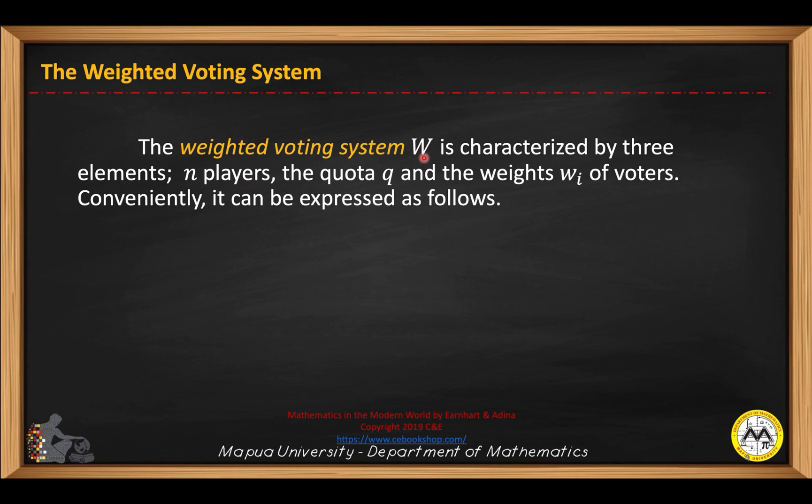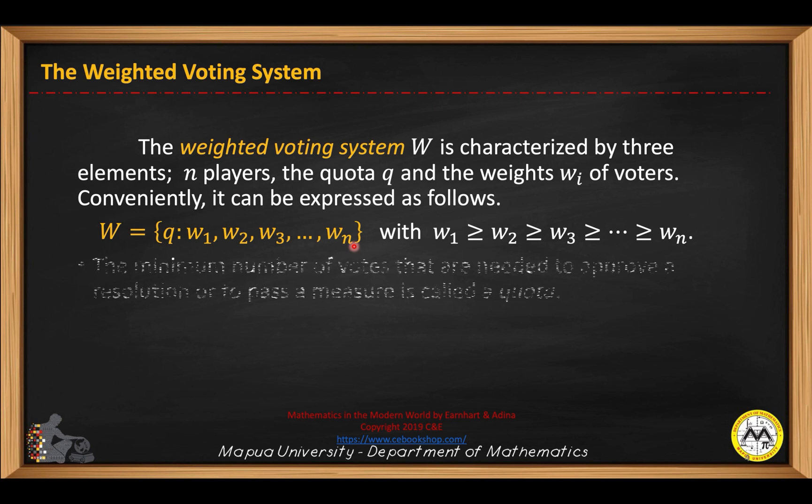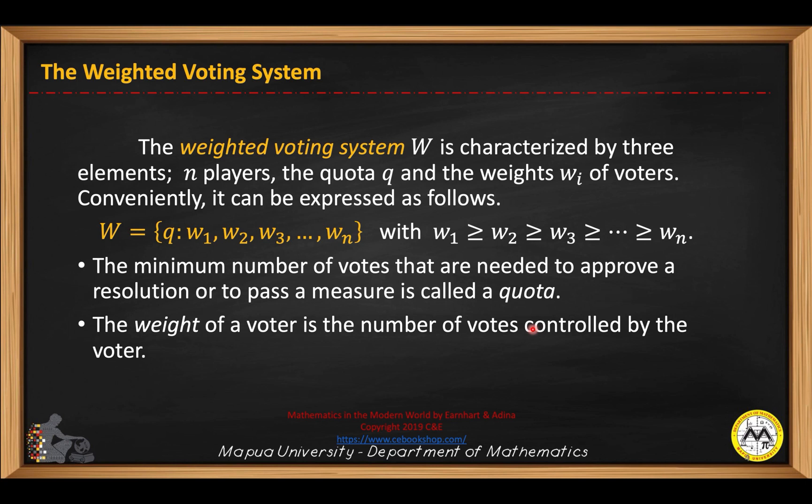The weighted voting system, denoted by W, is characterized by three elements: n players, the quota q, and the weights of each voter. It can be expressed as W = {q; w₁, w₂, w₃, ..., wₙ} with w₁ ≥ w₂ ≥ w₃ ≥ ... ≥ wₙ. The minimum number of votes needed to approve a resolution or pass a measure is called a quota. The weight of a voter is the number of votes controlled by the voter.